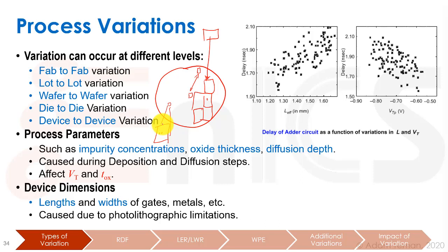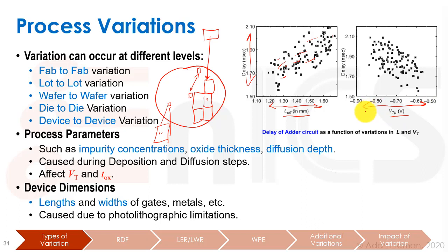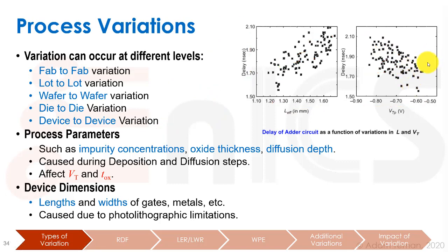Here's an older graph that shows this type of variation. If we take two different parameters — the effective length of the transistor and the threshold voltage of the transistors in an adder circuit — we can see that variation in transistor length gives a big scattering of the actual delay in the overall circuit. And if we take a variation in the threshold voltage of the PMOS transistors, again we're going to have a big scattering in the total delay of the adder circuit. So this is going to affect us a lot as designers.